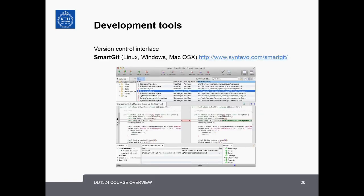Another development tool necessary for this course is a version control system. A version control system records changes to a file or set of files over time so you can recall specific versions later. It allows you to go back and correct mistakes and also to distribute and share your code. One interface we recommend is SmartGit, which works for Linux, Windows, and Mac OS X — available at the link shown.